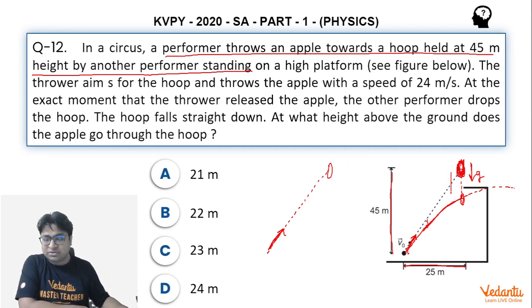Now with this thought in mind let's solve this question. This distance will be half gt square as it was free fall, where t is the time after which the apple passes through the hoop. And this 25 meter, we can write the equation as 25 equals v0 cos theta into t.